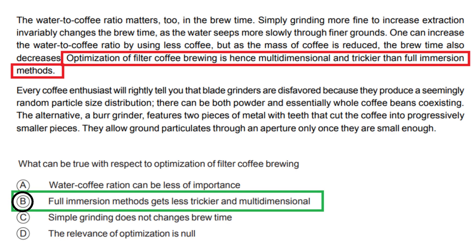Option C: Simple grinding does not change brew time. This option is contradicted by the paragraph. The paragraph clearly states that grinding the coffee more finely changes the brew time, as the water seeps more slowly through finer grounds. Option D: The relevance of optimization is null. This option is not consistent with the paragraph. The paragraph emphasizes the multidimensional and trickier nature of optimizing filter coffee brewing, indicating that optimization is indeed relevant.